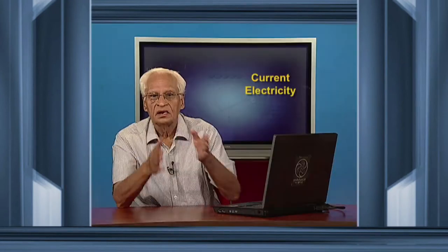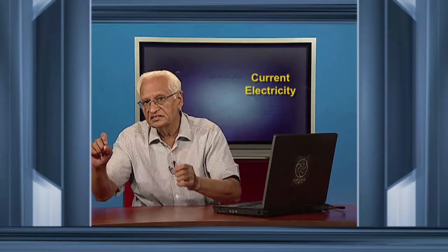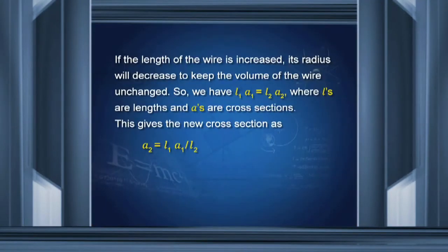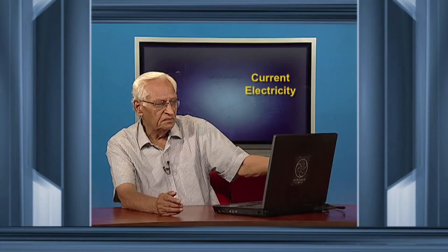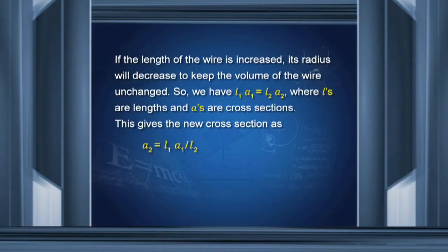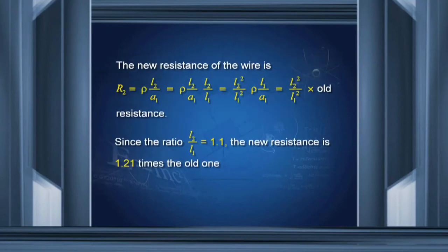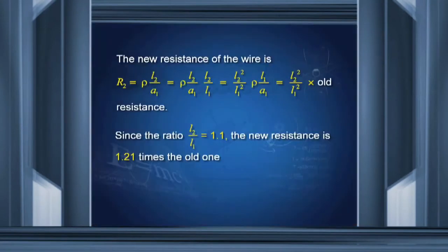The second part is the new resistance. Now, if the length is increased and nothing else changes, then the volume must remain constant. Therefore, if the length is increased, the area of cross section must change. That means, earlier length was L1 and earlier cross section was A1. Then L1 × A1 must remain equal to L2 × A2. That means the new cross section is L1 A1 / L2. The new resistance R2 is ρ × L2 / A2. Substituting A2, this is L2² / L1² into the old resistance ρ L1 / A1. Therefore, the resistance increases by the factor L2²/L1², and L2/L1 is 1.1 (10 percent). Therefore, the new resistance is 1.21 times the old one.